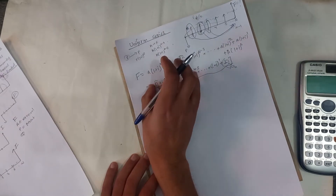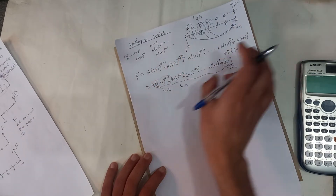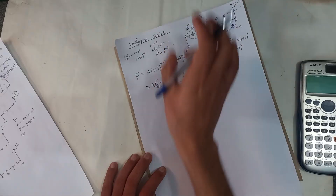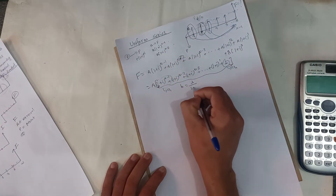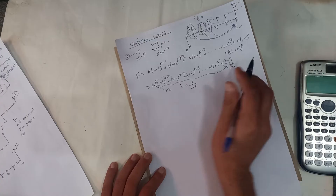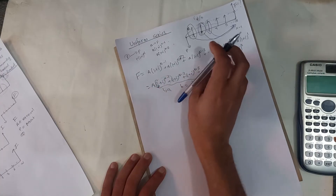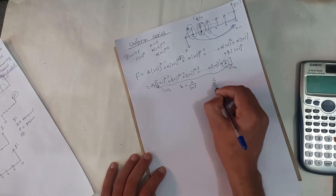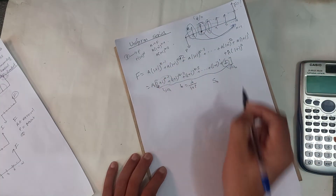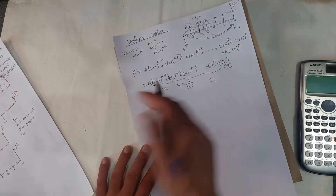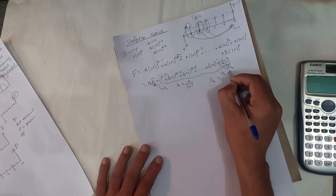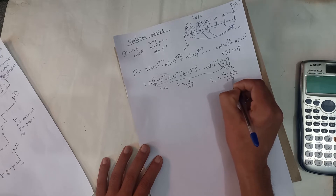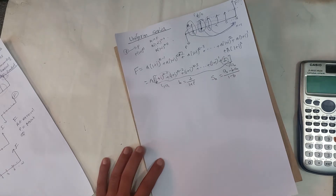2 divided by 1, 3 divided by 2, 4 divided by 3 — this ratio is 1 by (1 plus i). This is b, c. Now how do you sum this series? The formula for the sum is: first term minus ratio into last term, upon 1 minus ratio.